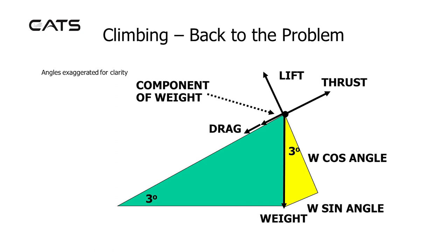Putting the triangle all back together again to look at the original problem, we can see the force opposing lift is weight cosine angle, and the force acting rearwards along the flight path is weight sine angle.